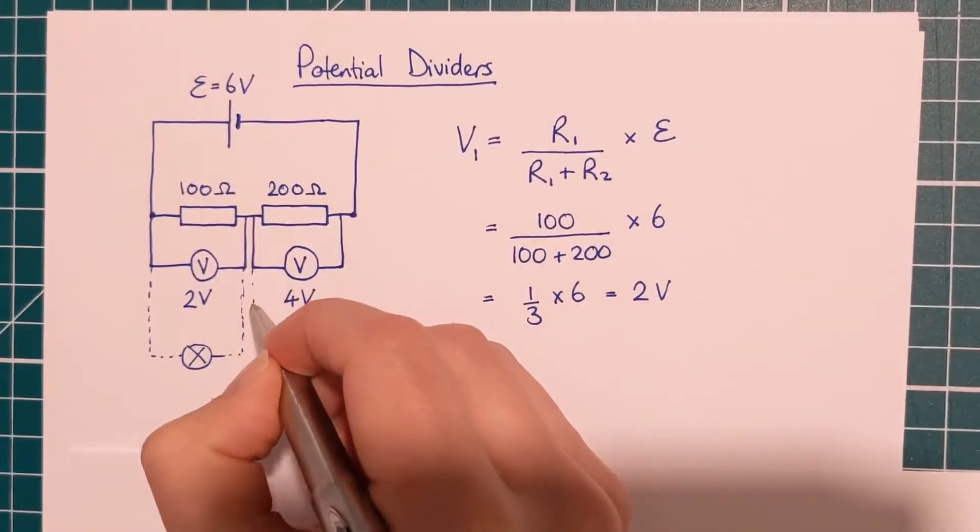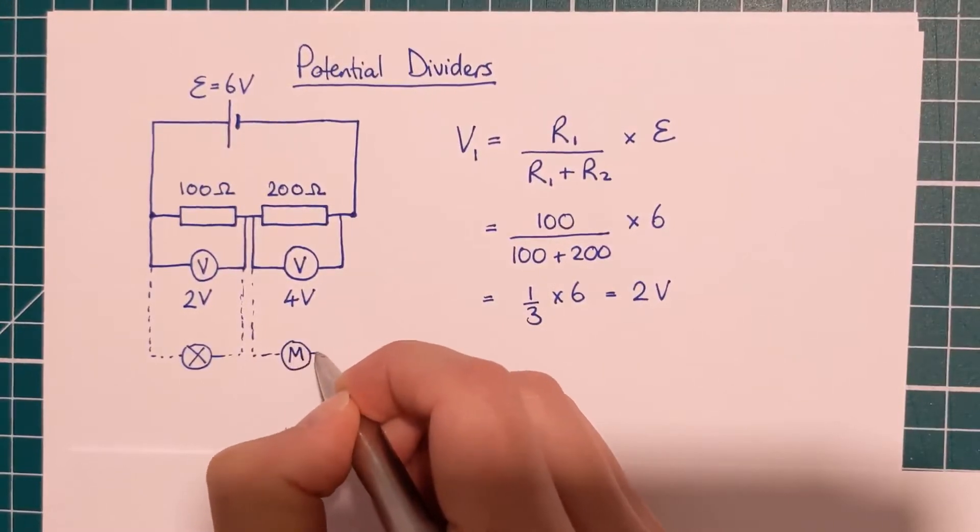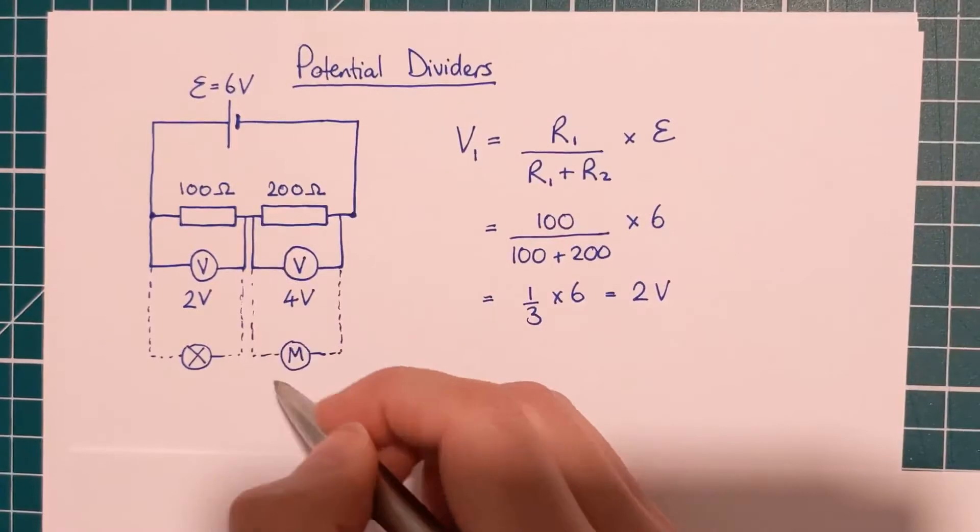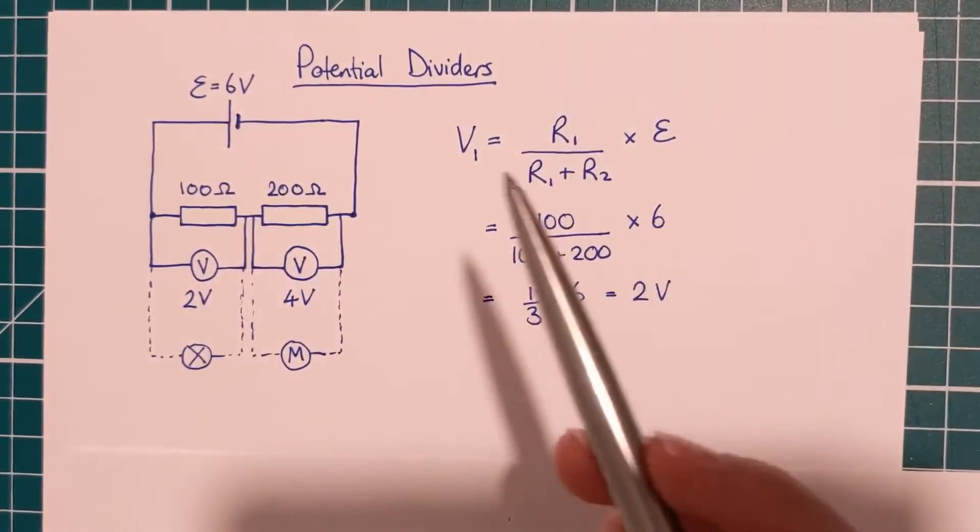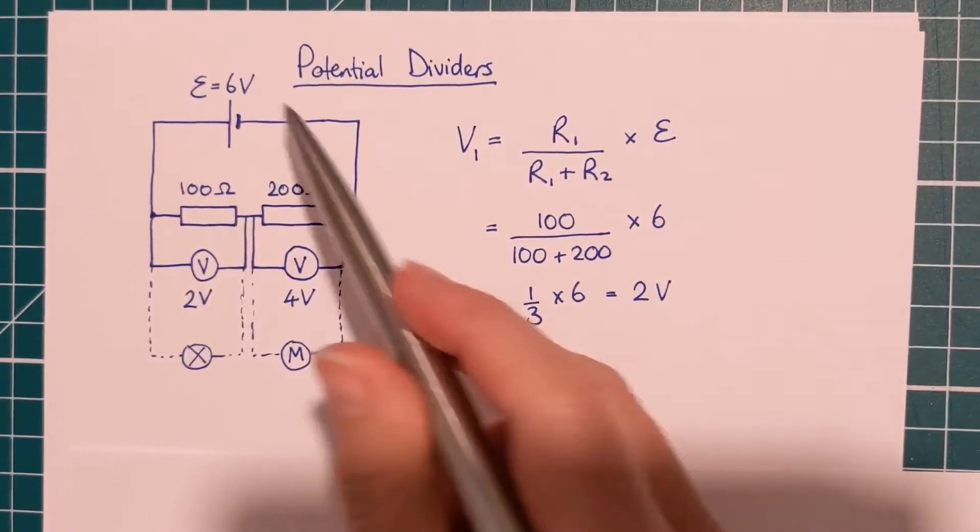And if I was to attach another little sub-circuit on here, maybe with a motor or something, as far as this little sub-circuit here goes, it is like it only has an EMF of four volts. So this is why it's important because you can have these little sub-circuits that are getting different amounts of voltage from your main circuit.